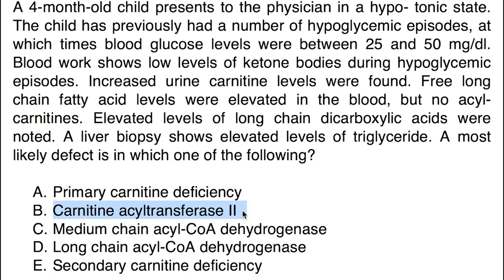Before confirming, let's rule out choices B and E. Carnitine acyltransferase-2 is located in the inner mitochondrial membrane and its job is to convert fatty acyl-carnitine back into fatty acyl-CoA and release the carnitine molecule. A defect in carnitine acyltransferase-2 would lead to decreased conversion of fatty acyl-carnitine into fatty acyl-CoA, causing elevation of fatty acyl-carnitins in the blood. Since this child has no acyl-carnitins elevated, carnitine acyltransferase-2 deficiency is ruled out.